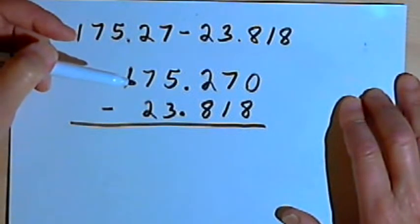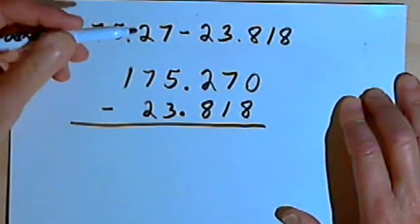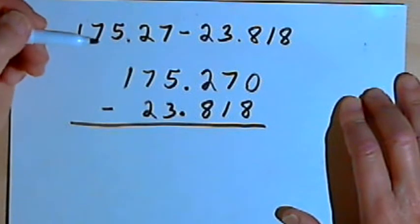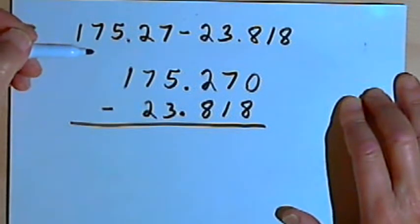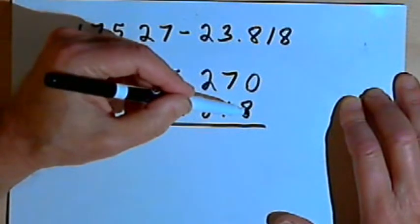Okay, so now I'm ready to do subtraction. I'm going to do the same kind of subtraction I normally would even if they weren't decimals. I'll just have to remember to put the decimal place in. So the first step would be to subtract 8 from 0.